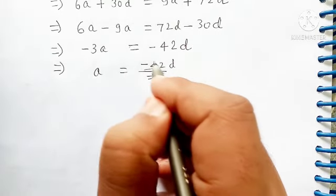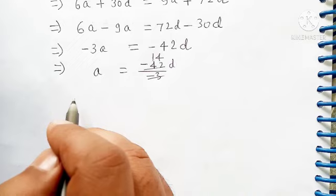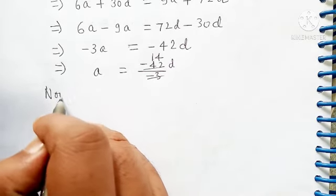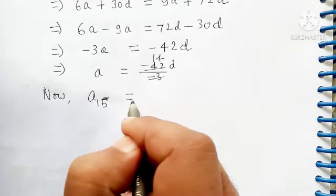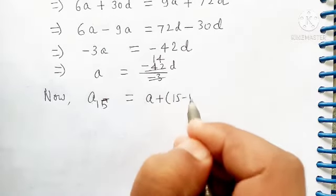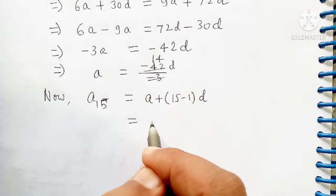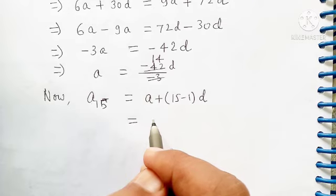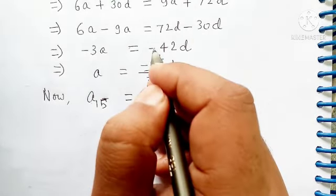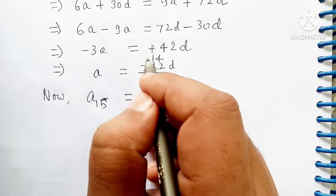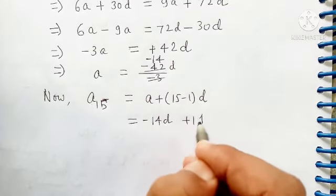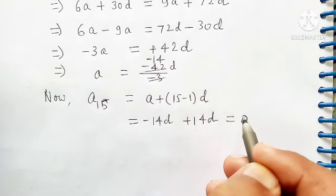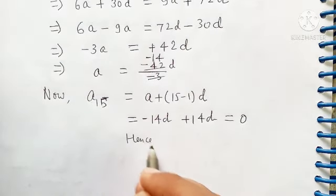Now A15, A15 is equal to A plus 15 minus 1 into D. We put the value of A, and A is here 72 minus 30 is plus 42. So we have minus 14D, A is minus 14D, plus 14D is equal to 0. Hence proved.